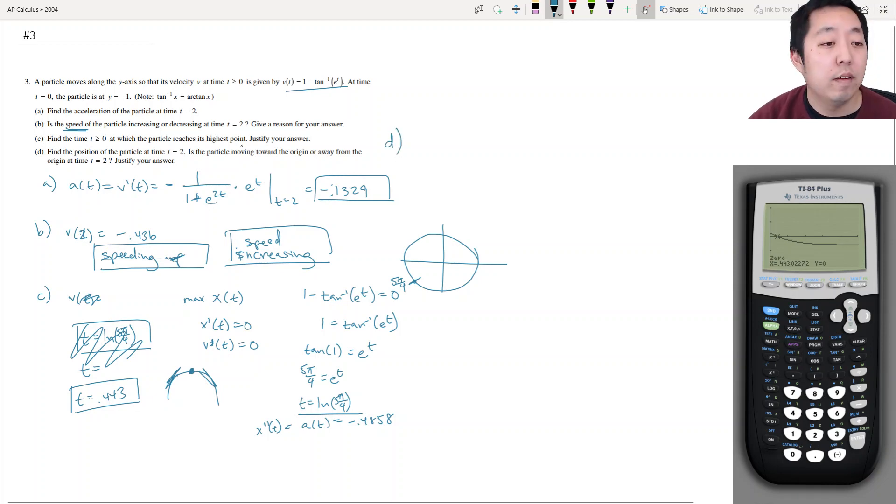D. Find the position of the particle at time t equals 2. Is the particle moving to the origin or away from the origin? Justify your answer. So x of t is just the integral of v of t. Right, point dt. Yeah. So it's position is given by the anti-derivative of 1 minus tan inverse e to the t dt. And I only know the derivative of tan inverse. I don't think I know the integral of it. I can't think of it off the top of my head. Find the position of the particle. Oh, okay. So we're going to do the integral. We're going to integrate from 0 to 2.